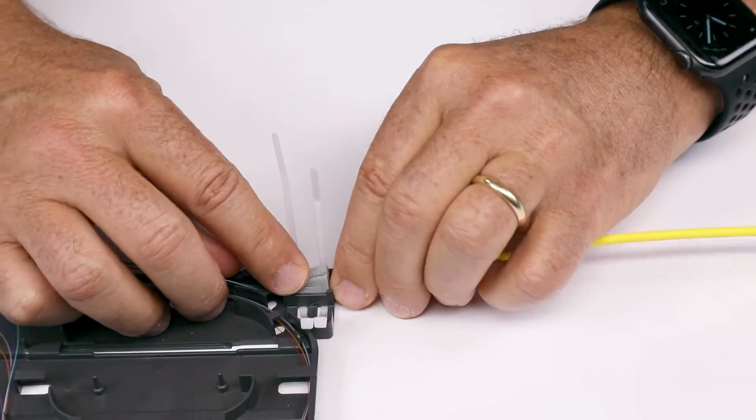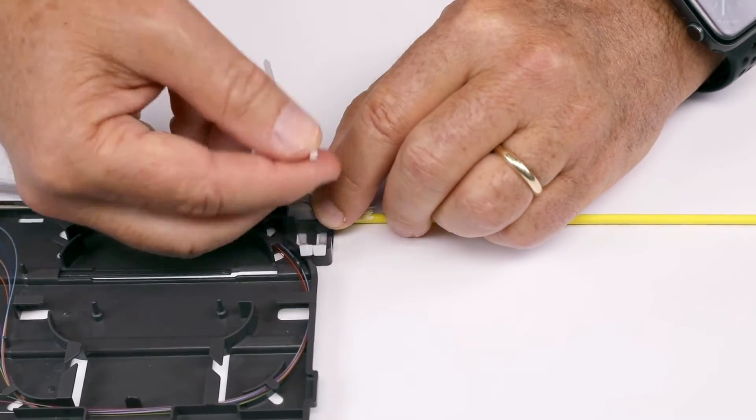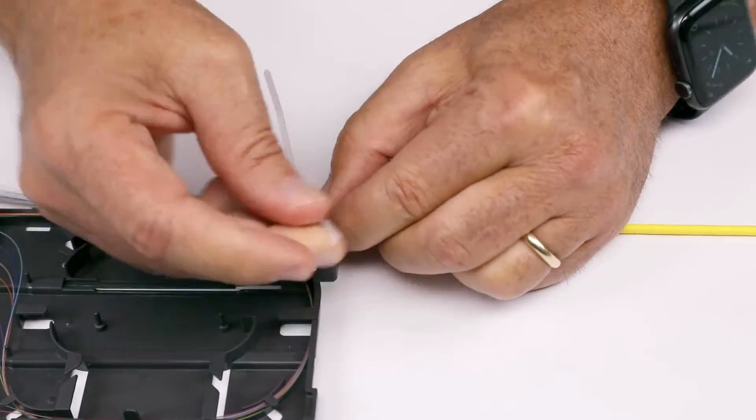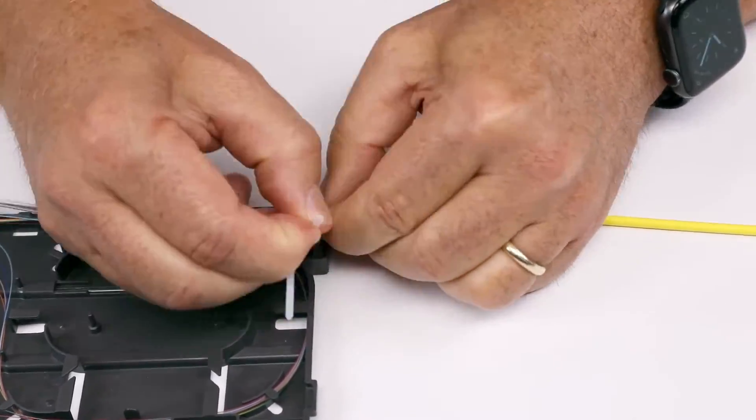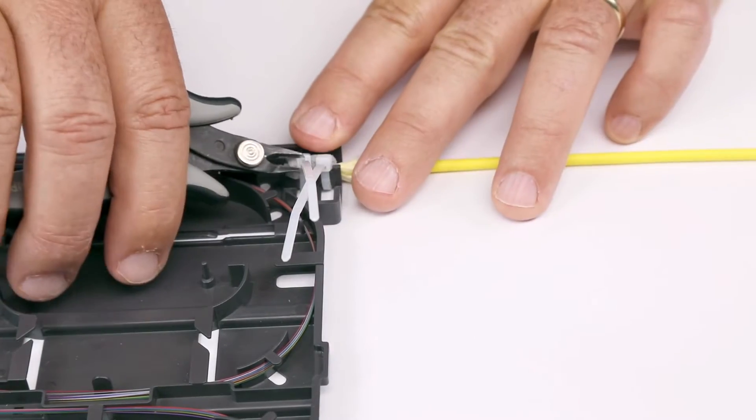Secure cable tie around foam, strength member, and cable. Snip off ends of cable ties close to head.